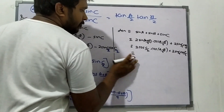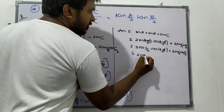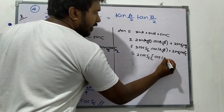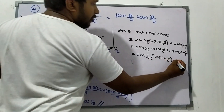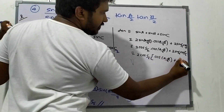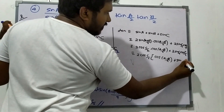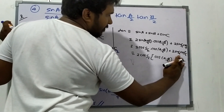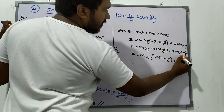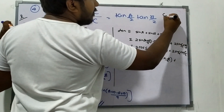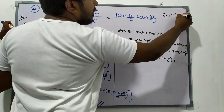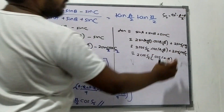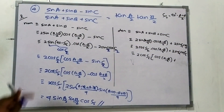We pull 2 cos C out to get cos A minus B by 2 plus sin C by 2. Since C by 2 equals 90 minus A plus B by 2, this becomes cos A plus B by 2.